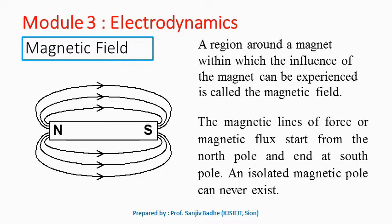We have seen that there is a field of force around a charged particle, and that field of force we called as electric field. Similarly, there will be a field of force around a magnetic body, and that field we will call as the magnetic field. So a region around a magnet within which the influence of the magnet can be experienced is called as the magnetic field. If another charged particle or a magnetic body enters in this field of force, it will also experience a force.